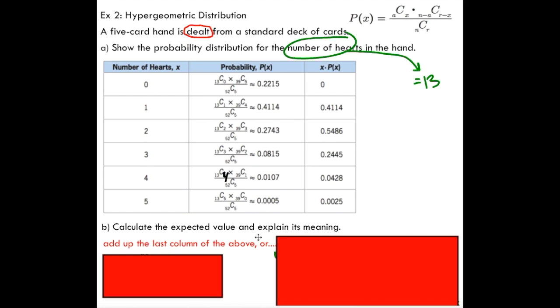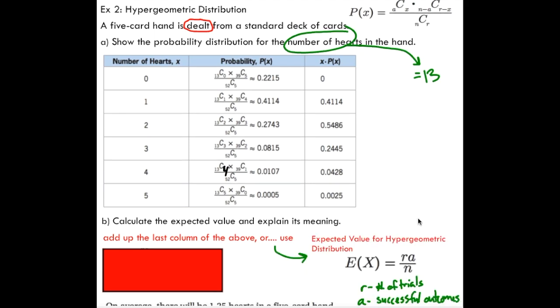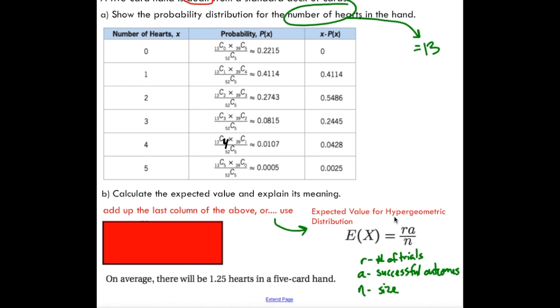Part B says calculate the expected value and explain its meaning. We know expected value is the sum of x times px for all of our outcomes. Add them all up. It will take you quite some time. There is a shortcut and it looks like this. The expected value for hypergeometric distribution is E(X) equals r times a over n. So this is very similar to our binomial distribution which is not good because some people get confused with these formulas. Remember for binomial distribution, our expected value is n times p. Just like that one, this one's very simple, way easier than making all these calculations, adding them up to find your expected value.